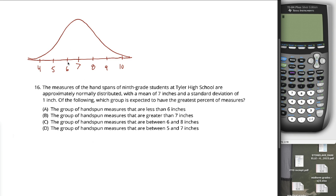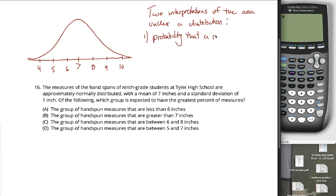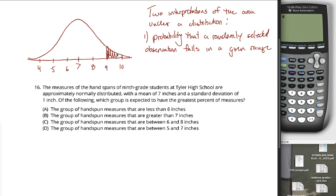The area underneath this curve between any two bounds tells you two different things — and this is true of any distribution, not just the normal distribution. The first interpretation is it's the probability that a randomly selected observation falls in a given range. I'm not asked any questions about probabilities of randomly selected individuals, so this is not the interpretation I care about for this example.